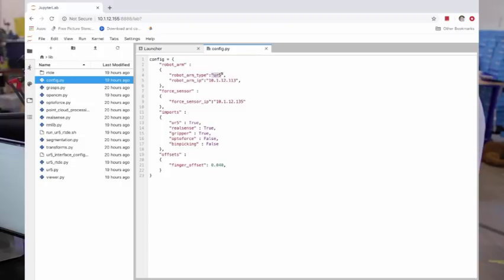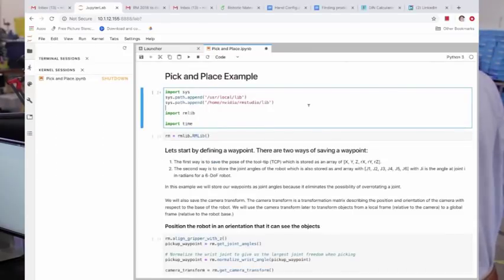Navigate to the lib folder and open the file config.py to provide the SmartHand with the IP address of your robot. Here you can also configure other hardware as well as the length of the hand's fingers.